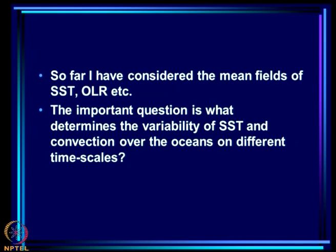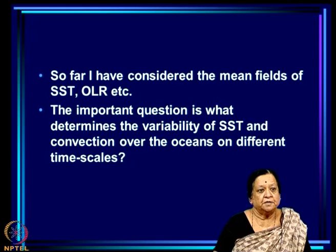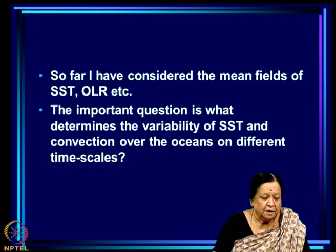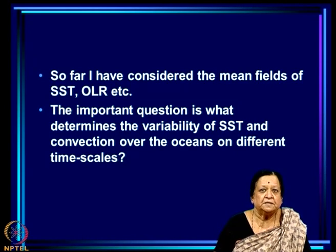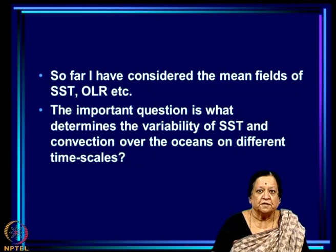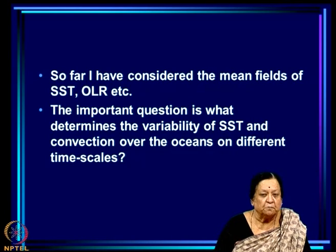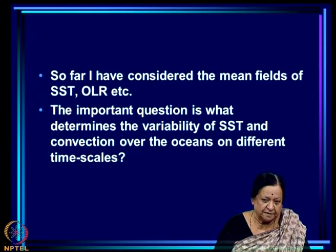So far in this lecture we have looked at the mean fields of SST — monthly means, seasonal patterns, heat budgets of monthly means — and understood the mean patterns in terms of the relationship of convection to SST and what determines SST in terms of the heat budget. But the important question is what determines the variability of this SST and hence of convection over oceans on different time scales, because it is the variability of convection which is linked to the variability of the monsoon. We will start looking at that from the next lecture.